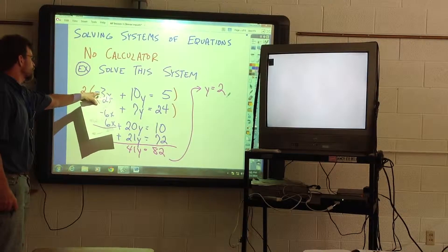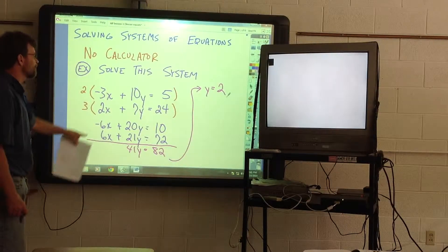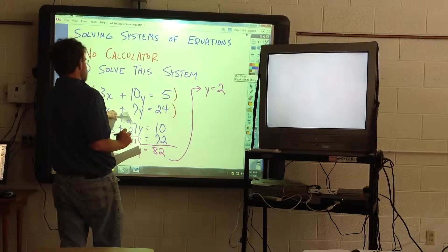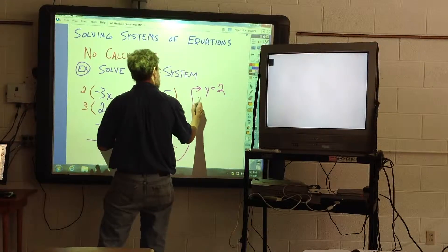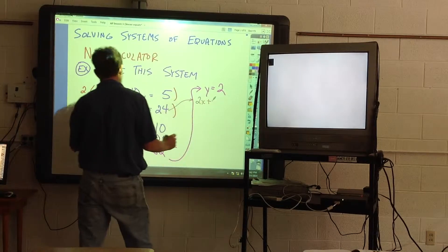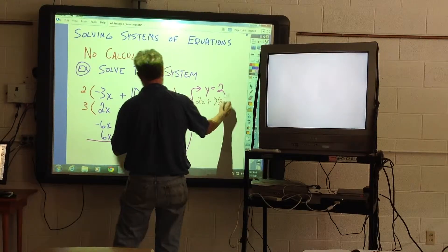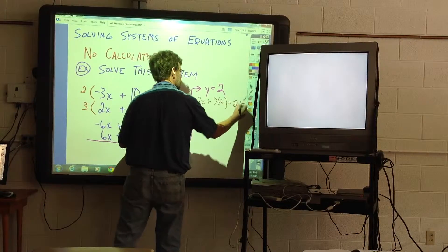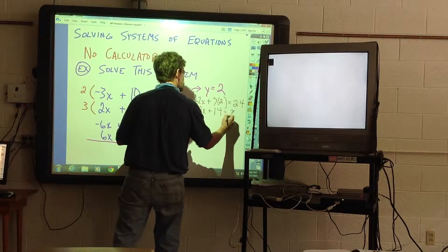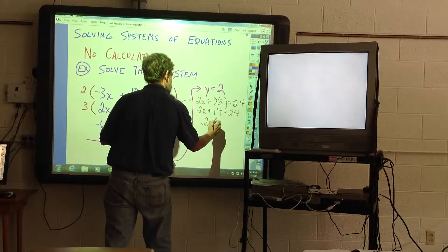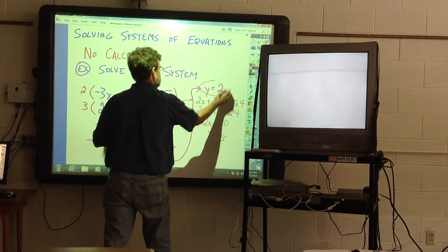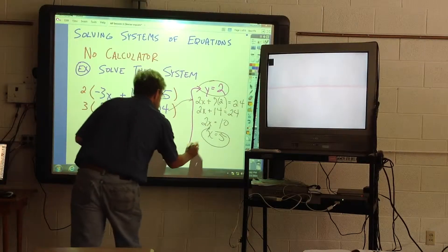You can plug 2 in for Y on any of these to find out what X is, and so I'll use this one. I don't like negative. So we get 2X plus 7 times 2 equals 24. 2X plus 14 equals 24. 2X equals 10. X equals 5. And so our solution is X equals 5, Y equals 2.